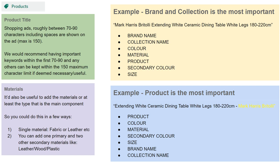Looking at the yellow section example: Mark Harris is the brand, Brittoli is the collection, Extending White Ceramic Dining Table is the product — and it also includes the material, color, secondary color (white legs), and size. The brand name, then the collection name are the key points, mixed in together. When Google does its search it's going to pick up the brand and the collection as the key points. If you're focusing on driving traffic through the brand and the collection, catching low-hanging fruit, that's the most important structure for you.